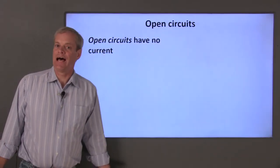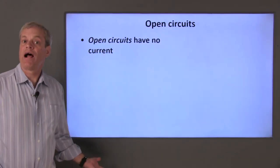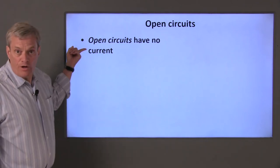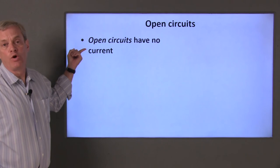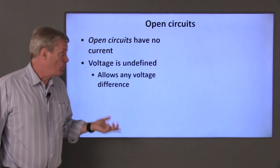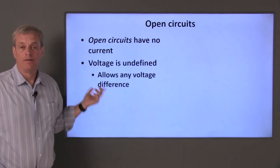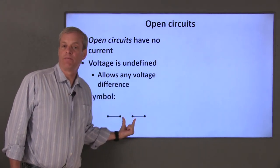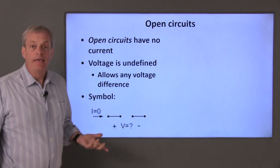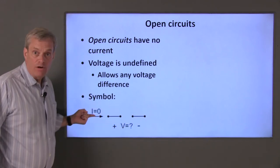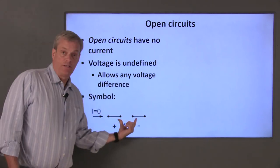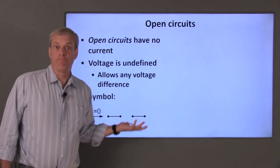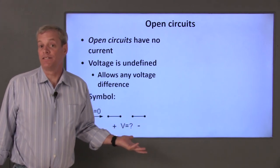An open circuit doesn't allow any current to pass through it, no matter how much voltage difference you apply across it. Therefore, the current through an open circuit is zero by definition, while the voltage across it is undefined. Symbolically, an open circuit is represented by a break between its terminals. The current is zero, and the voltage difference across the open circuit is not defined by the open circuit itself — it is set by the elements the open circuit is connected to.